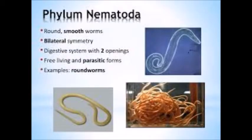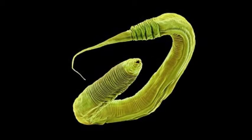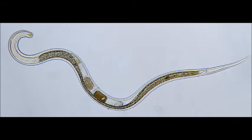Next we have Nematoda. This phylum consists of only roundworms. These organisms have bilateral symmetry. They, like a lot of these phyla, contain tissues. Their digestive systems form, but the anus comes in first. All worms work on the same system together, but that's how science works.